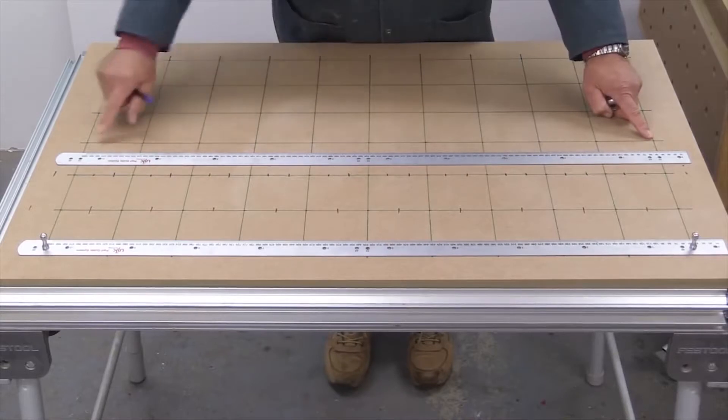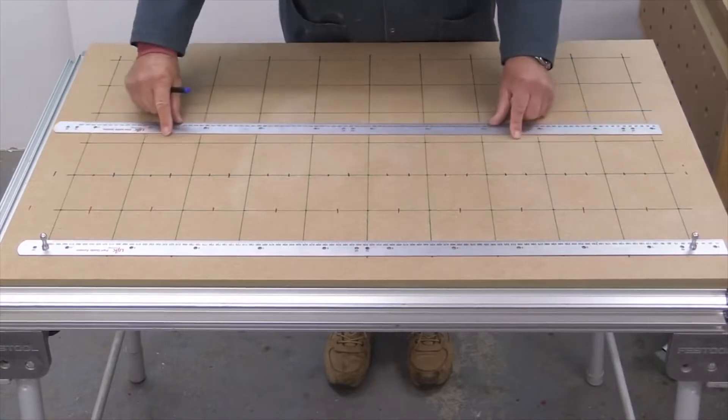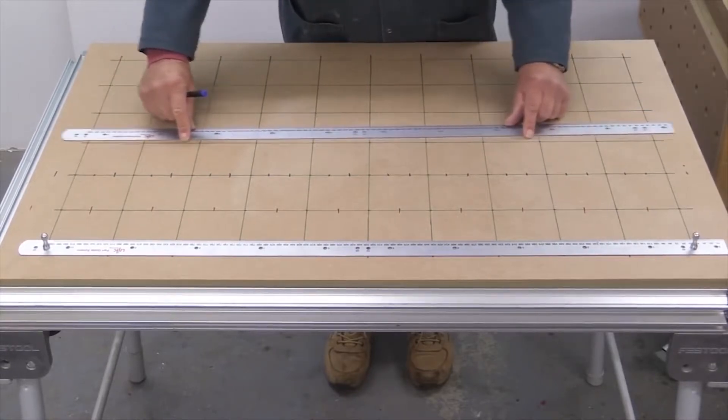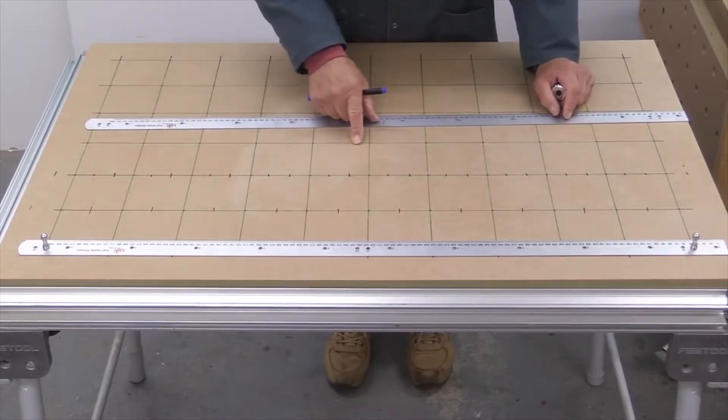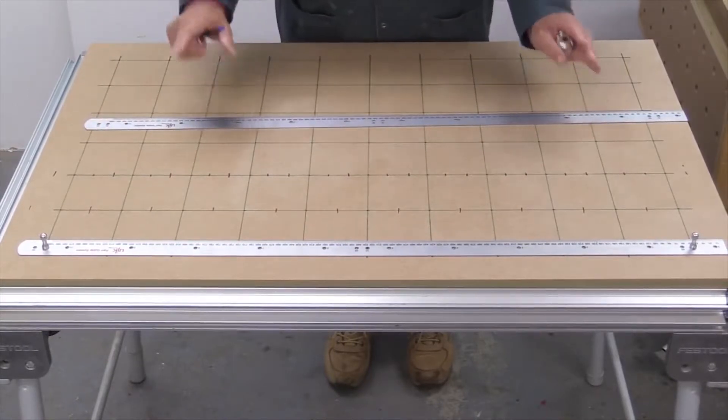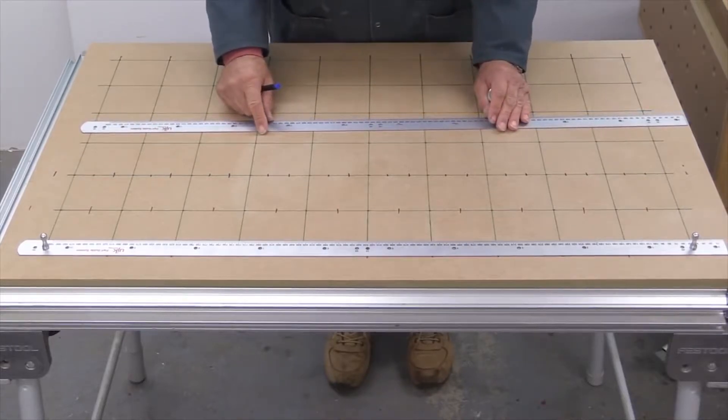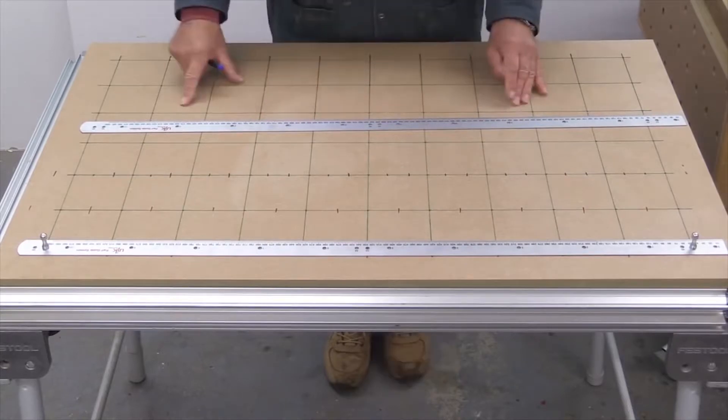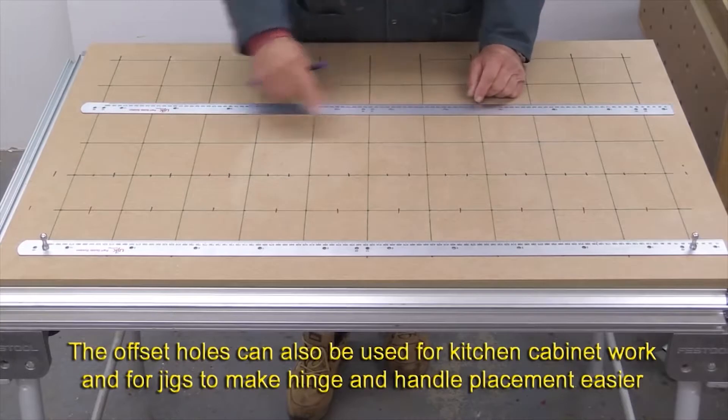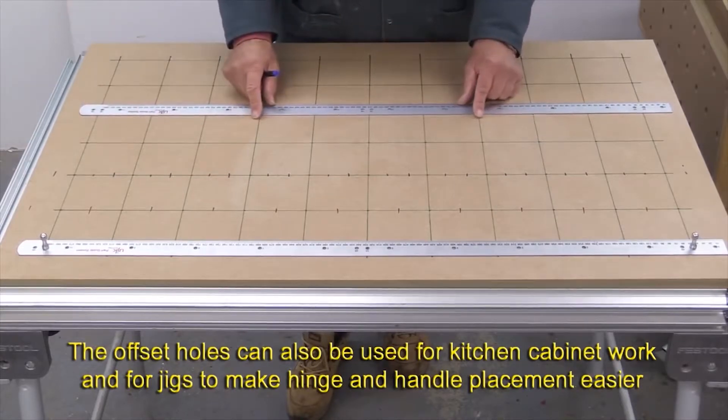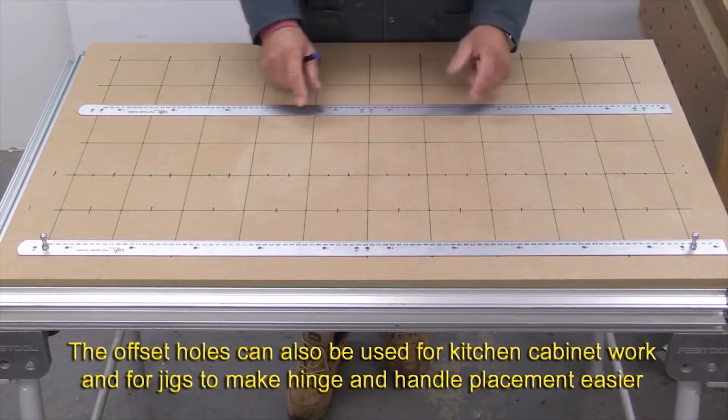You can see now, having created your initial set of holes at 96 spacing, you can then using the offset holes move the Parf stick to the left or to the right to create some additional holes. In addition to making tops, you can use these 32 millimeter offsets to create a pattern of holes for shelving at 32 millimeter intervals or at 48, whatever it might be.